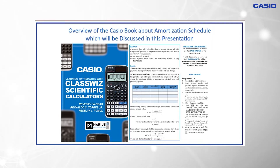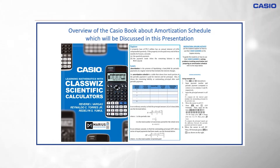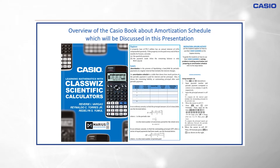To begin with, amortization is the process of liquidating a loan or debt by periodic payment at a regular interval that includes the interest charges. An amortization schedule is a table that shows how much portion of the periodic payment is paid for interest and for principal. Also, it shows the remaining liability or outstanding principal after each periodic payment.